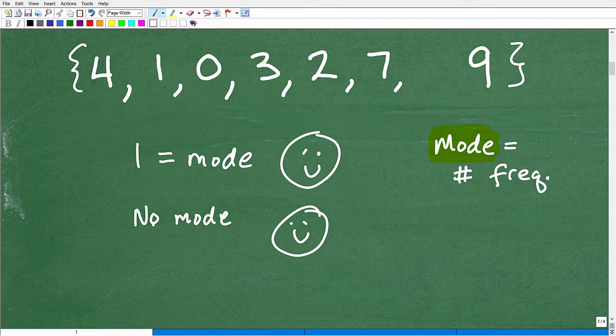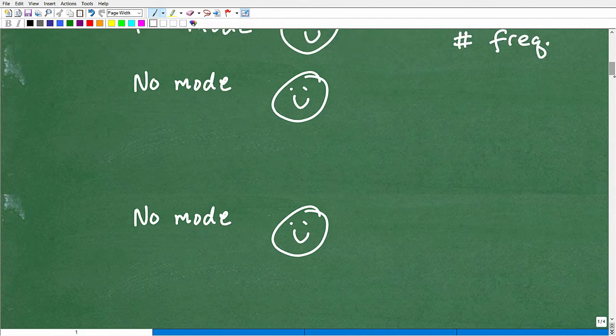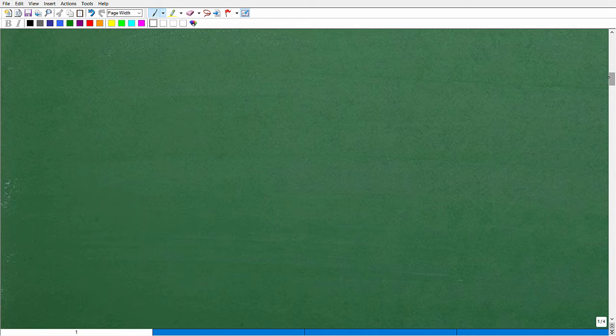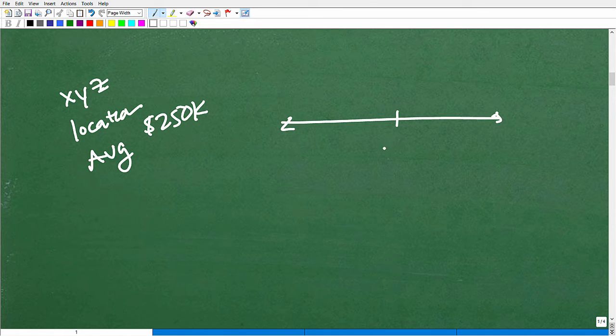I like to use this example, if you watch my other videos, home prices. So let's say an XYZ location. The average, everyone's familiar with the average, right? The average home price is $250,000. So you're like, okay, $250,000, it's right here. So what does that tell us? Well, it doesn't really tell us a lot. It doesn't tell us if half the houses are greater than $250,000 or half the houses are less than $250,000. Remember, we're talking about the average or the mean. But it does tell us maybe something. You kind of get a feel for what's going on.